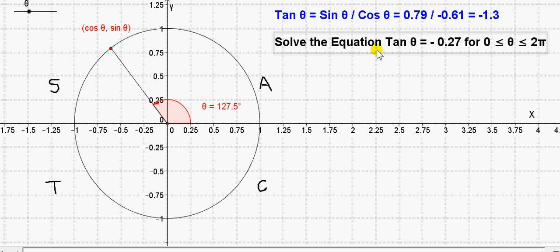Suppose we want to solve the equation tan θ equals minus 0.27 for θ between 0 and 360 degrees or 2π radians.